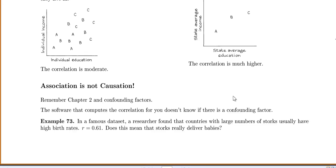And finally, even though we've talked about this many times, association is not causation. So remember chapter 2 with our confounding factors and the software that computes the correlation for you doesn't know if there's a confounding factor.